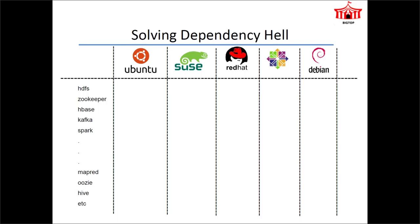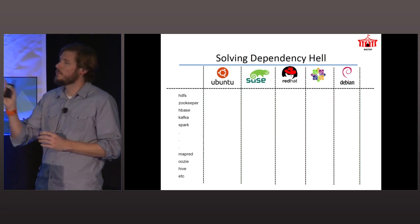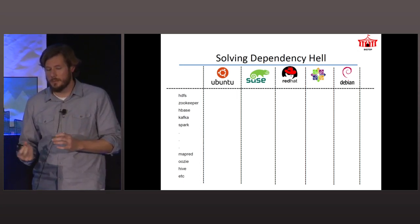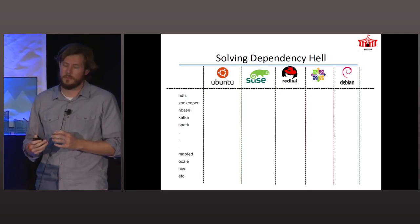Once you start using one or more of these components together, you have this matrix across the top of supported platforms at the OS level, and down the left side you have the 20-plus components in Big Top. When you take another dimension of versions, you have quite a big dependency mess, so Big Top brings it all together into a framework.